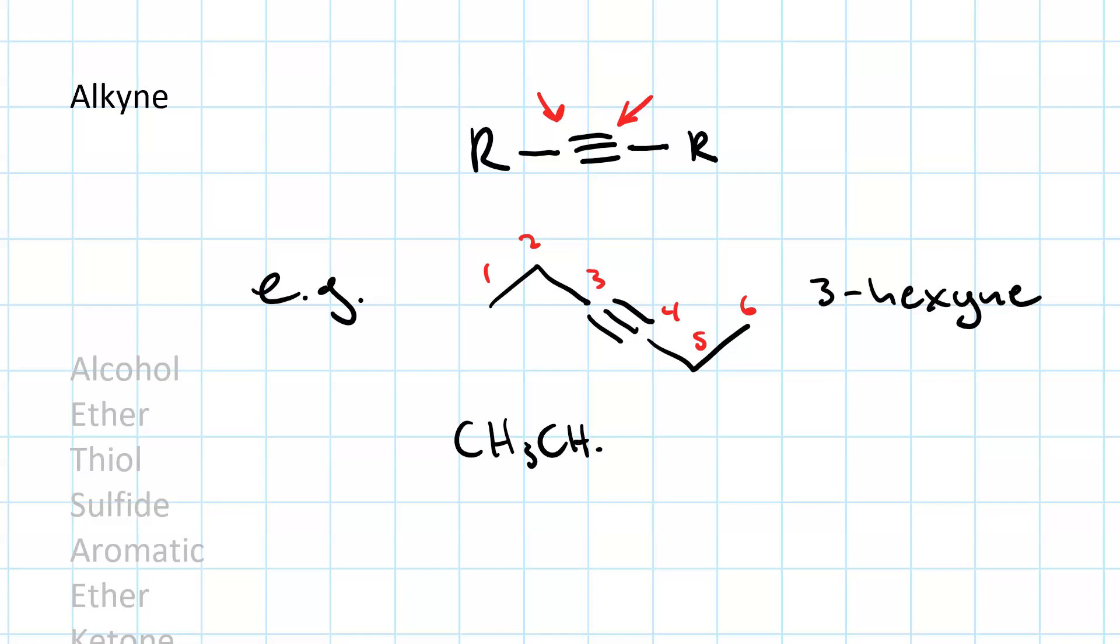An alkyne contains a carbon-carbon triple bond. There is the triple bond. Don't forget there are carbons at each of these points. Here's an example. And this one is called 3-hexyne, or you could call it hex-3-yne. And the condensed structure. There's carbon 1, carbon 2, carbon 3 triple bonded to carbon 4. Carbon 5 is a CH2. And carbon 6 is a CH3.